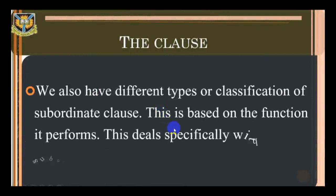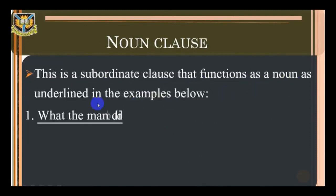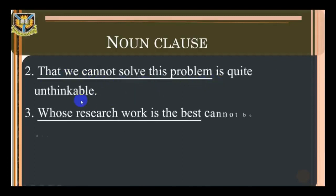We also have different types of subordinate clause based on the function they perform. Noun clause: this is a subordinate clause that functions as a noun. For example: 'What the man did to his wife is wrong' — 'what the man did' is a noun clause. 'That we cannot solve this problem is quite unthinkable' — 'that we cannot solve this problem' is a noun clause. 'Whose research work is the best cannot be ascertained.'